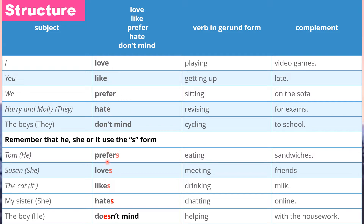For example: love playing, like getting up, prefer sitting, hate revising, don't mind cycling, prefers eating, loves meeting, likes drinking, hates chatting, doesn't mind helping. All verbs that come after love, like, prefer, hate, don't mind — or their S-forms — must have -ing. Remember: you have to know the subject and then decide whether to put S or no S.